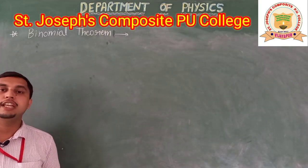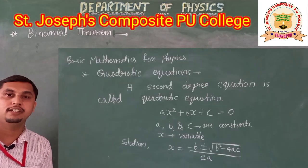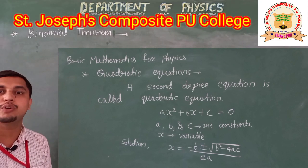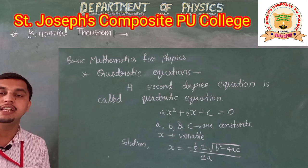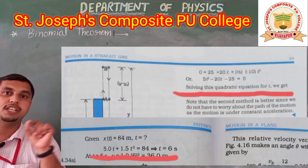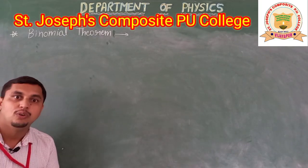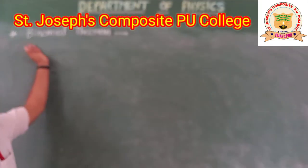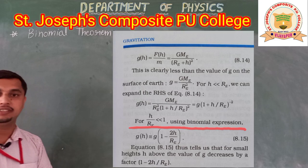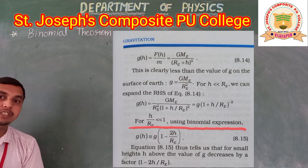Hello, my dear students. In the previous video class, we learned about a quadratic equation under basic mathematics for physics. This quadratic equation helps in understanding the concept of mechanics, especially in motion in a straight line and motion in a plane chapter. Now, in this video, we have to learn about the binomial theorem, which helps in the gravitation chapter. The applications of binomial theorem help in understanding the concept of gravitation.